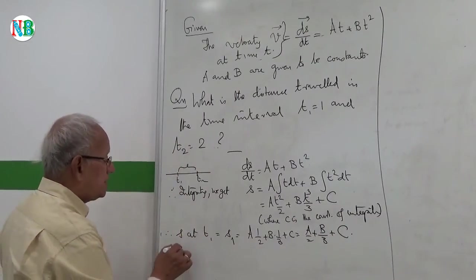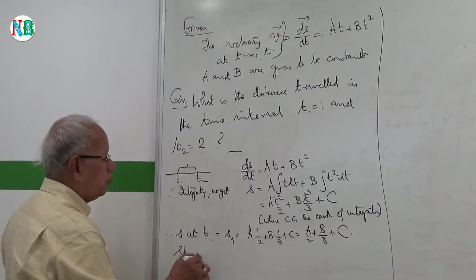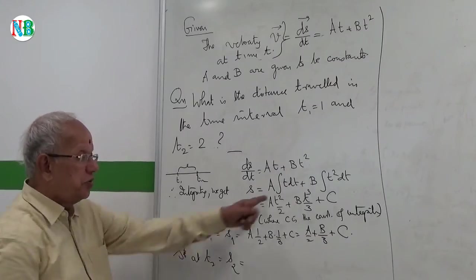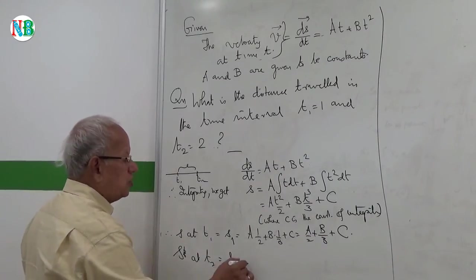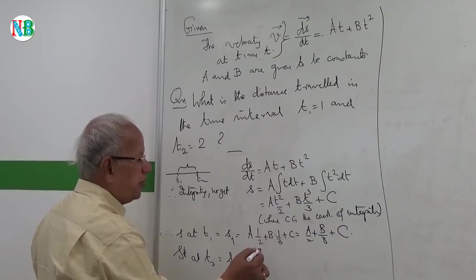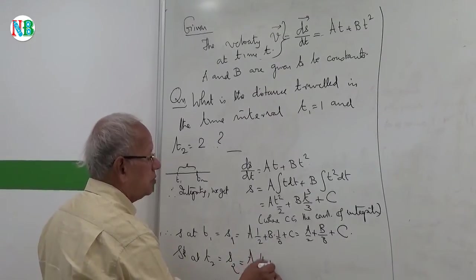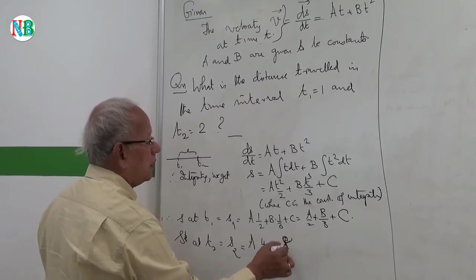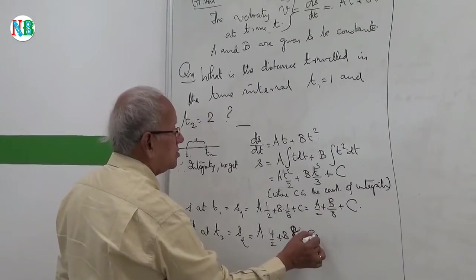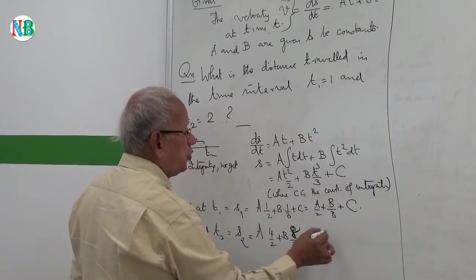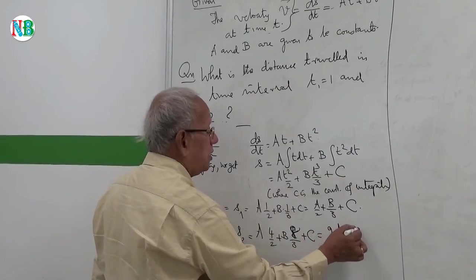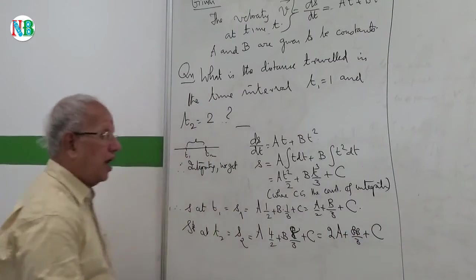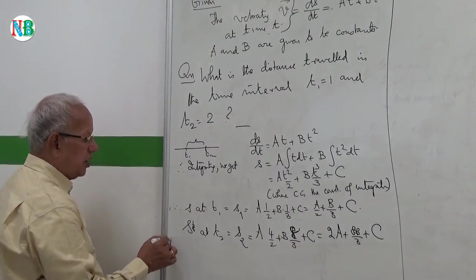And what is s at t2? Let me call it as s2. Then I have to substitute t equals 2 here. So when I substitute t equals 2, t square becomes 4, so it is 4 over 2 plus b, t cube is 8, 8 by 3 plus c. So I can rewrite this as 2a plus 8b by 3 plus c.